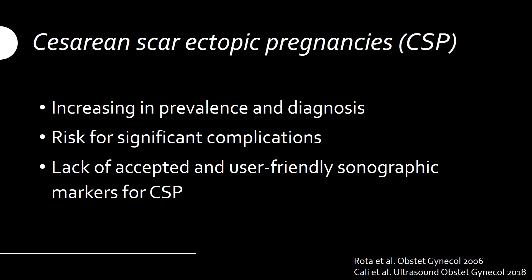Cesarean scar ectopic pregnancies, or CSP, are rare. The incidence is about 1 in 2,000 pregnancies, but have increased in prevalence over time due to the rise of cesarean sections. Advancement in prenatal imaging has also allowed for improved diagnosis of CSP. However, having a cesarean scar ectopic pregnancy puts a patient at high risk for significant complications, such as uterine rupture, placental accreta spectrum, and the need for lifesaving hysterectomy.